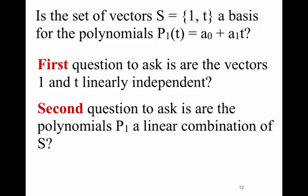The second question is: are the polynomials P₁ a linear combination of S? That is, is there a way to combine 1 and T to make up any polynomial of the form A₀ + A₁T? We could take A₀ times 1 plus A₁ times T, and that gives us all polynomials of the form A₀ + A₁T. So S is linearly independent — the first question is true — and we can multiply 1 and T by appropriate scalars to get any vector in P₁. A simple basis for R² would be the first two columns of the 2×2 identity: the vectors (1,0) and (0,1). Any linearly independent set of vectors that spans the space forms a basis.